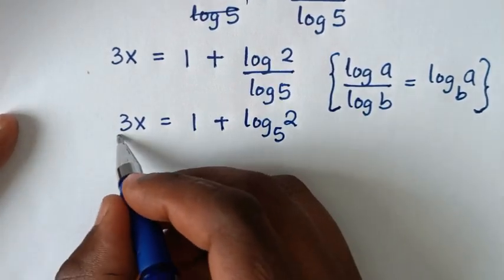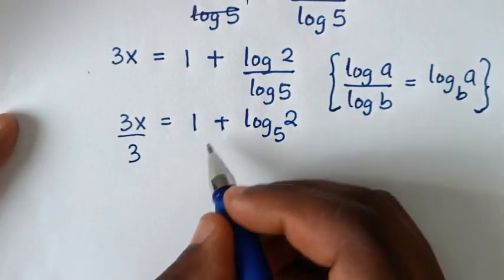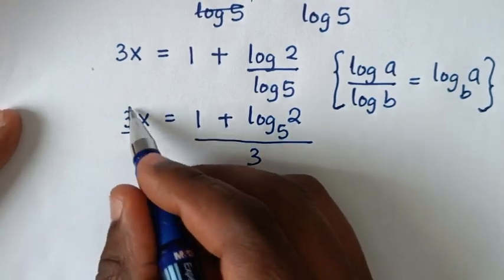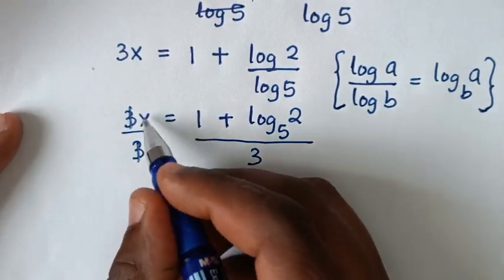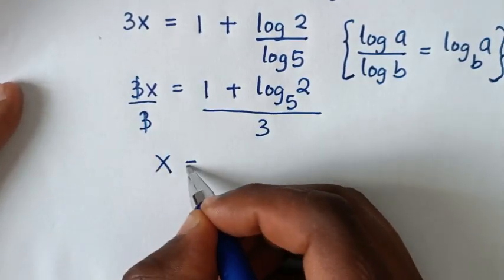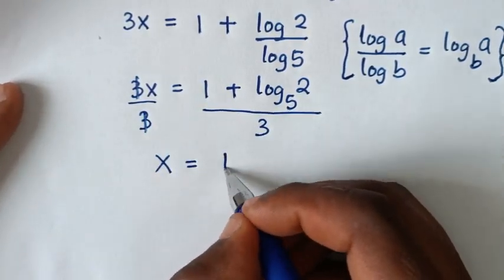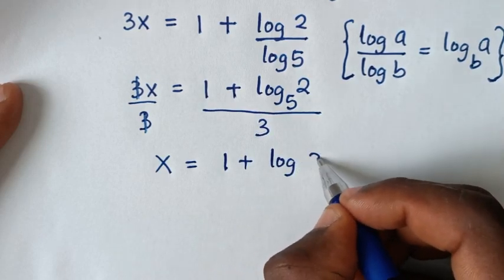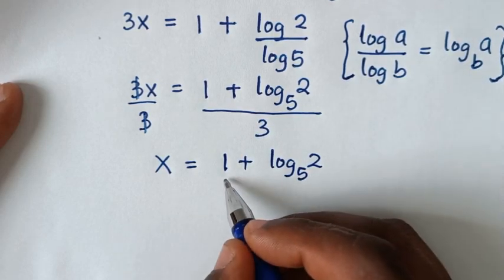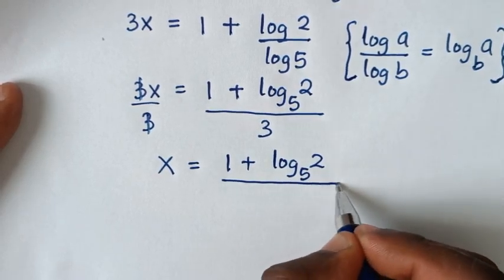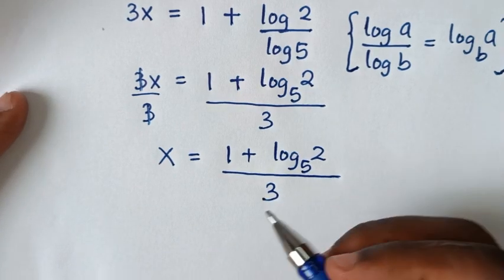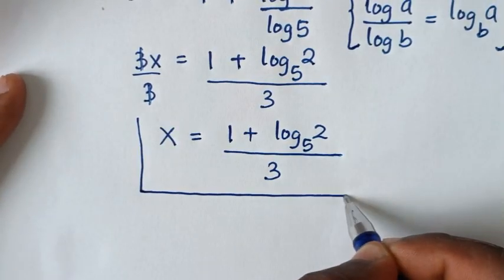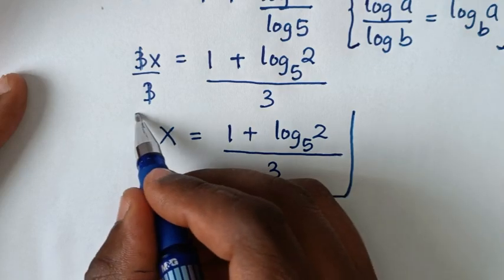Then we'll divide by 3 on both sides, so this 3 and this 3 will cancel, giving us x. So x is equal to 1 plus log of 2 base 5, all over 3. This is the final answer for the value of x in this problem.